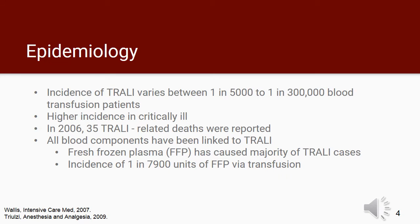Since 2003, TRALI has been the leading cause of transfusion-related deaths. The actual incidence of TRALI lies somewhere between 1 in 5,000 to 1 in 300,000 patients that are blood transfusion recipients. The incidence is 50 to 100 times higher amongst patients that are critically ill. In 2006, there were a total of 35 TRALI-related deaths reported, more than the combined total of other transfusion-related deaths. All available blood components, including whole blood cells, red cells, apheresis platelets, whole blood platelets, fresh frozen plasma, cryoprecipitate, granulocytes, stem cell products, and even IV immunoglobulin preparations have been associated with TRALI. TRALI occurs most often with fresh frozen plasma, with an incidence of 1 in 7,900 units.